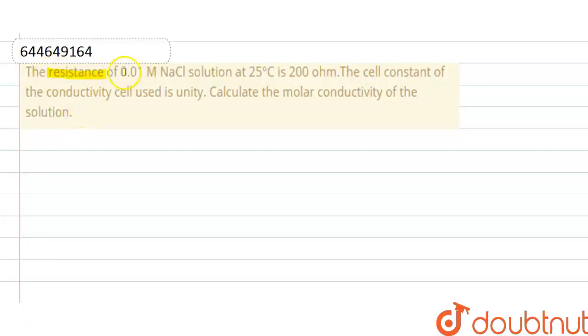The resistance of 0.01 molar NaCl solution at 25 degrees Celsius is 200 ohm. The cell constant of the conductivity cell used is unity. Calculate the molar conductivity of the solution.